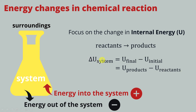So the change of internal energy of the system equals the energy of products minus the energy of reactants, and this difference is given a sign. If delta U of the system increases, energy comes into the system and delta U is positive. If delta U decreases, energy is out of the system and delta U is negative.